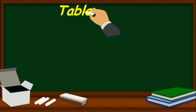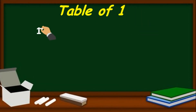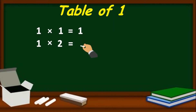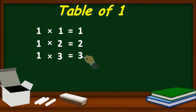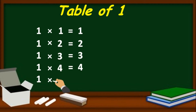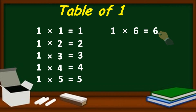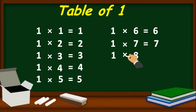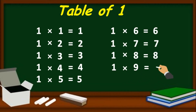Table of 1. 1 one's are 1, 1 two's are 2, 1 three's are 3, 1 four's are 4, 1 five's are 5, 1 six's are 6, 1 seven's are 7, 1 eight's are 8, 1 nine's are 9, 1 ten's are 10.